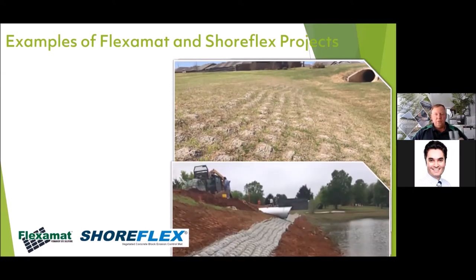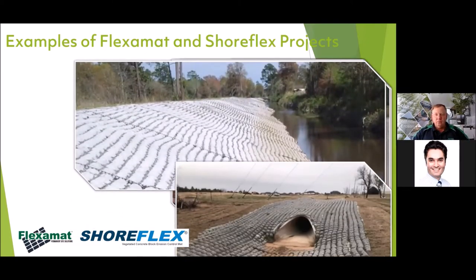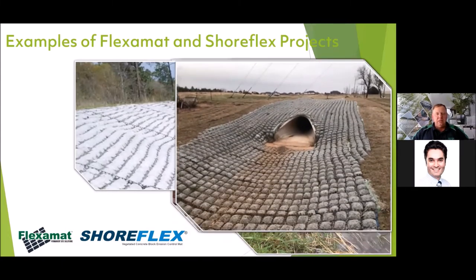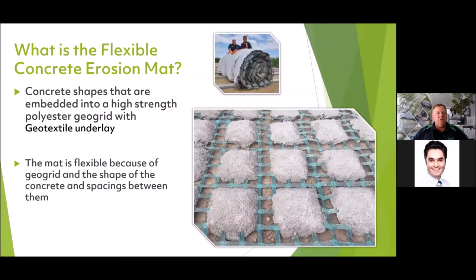You can see grass growing through the US products — they easily go around structures. So what really is a flexible concrete erosion mat? It's these concrete shapes — rectangular, embedded into a polyester geogrid — and underneath that we place the geotextile underlay. One of the key benefits is the mats are flexible, and the shape of the concrete allows space between them for vegetation to grow through.